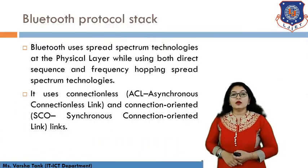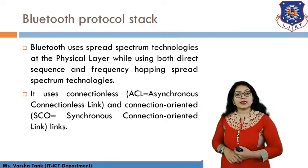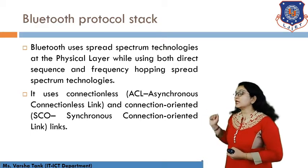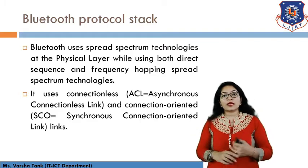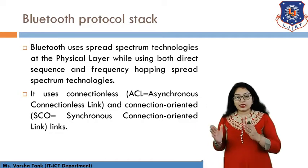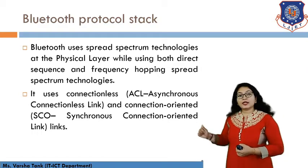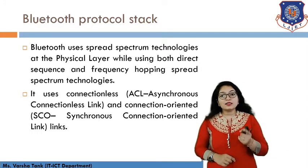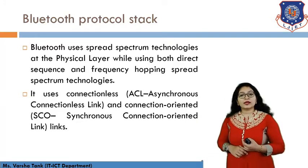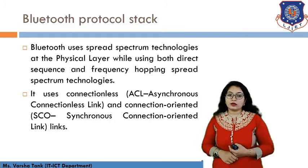Bluetooth uses spread spectrum technology at the physical layer, using both Direct Sequence Spread Spectrum (DSSS) and Frequency Hopping Spread Spectrum (FHSS). It supports two link types: ACL, which is the Asynchronous Connection-Less link, and SCO, which is the Synchronous Connection-Oriented link.